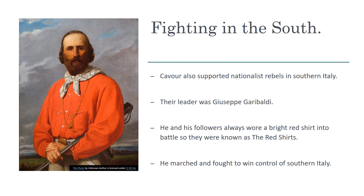In the southern part of Italy, Cavour was also secretly supporting nationalist rebels. Their leader was Giuseppe Garibaldi. He and his followers always wore a bright red shirt into battle, so they were known as the Red Shirts. In May of 1860, Garibaldi and his followers captured Sicily. They then marched north and united with the northern kingdom of Piedmont-Sardinia, winning much of southern Italy.